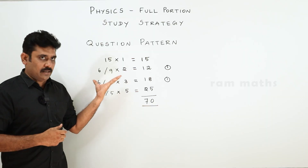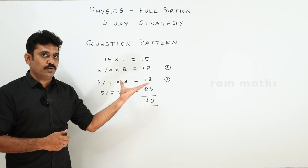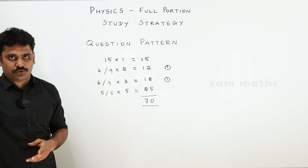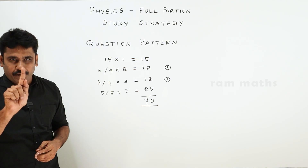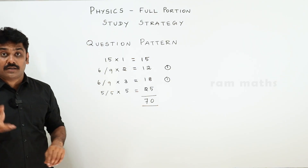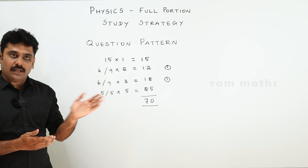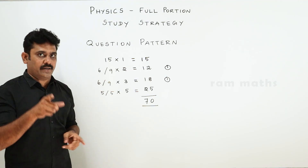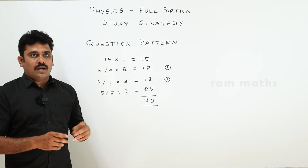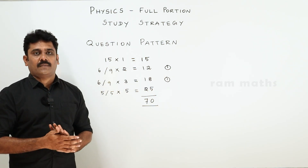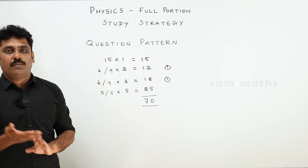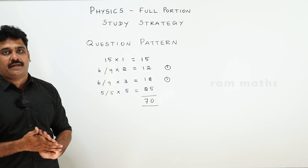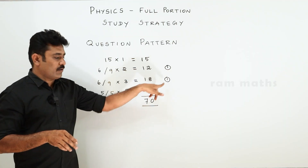If you look at the syllabus, in 2019 we conducted the first board exam. At that time in physics, there was a problem in the entire question paper — 2-mark compulsory questions and reasoning questions. In the exam, you have 2 or 3 mark problems in the compulsory and reasoning questions.